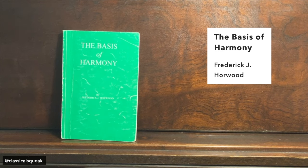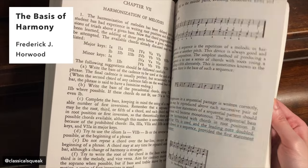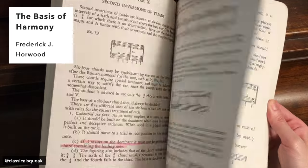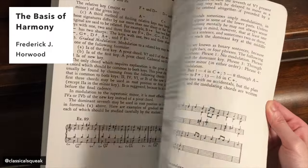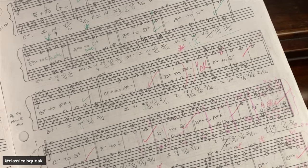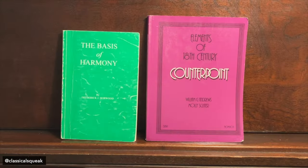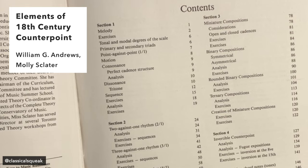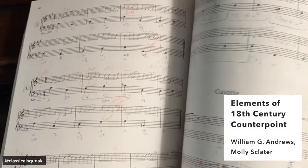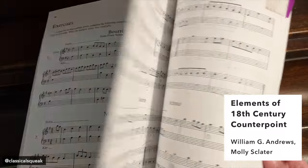For harmony, we used the Basis of Harmony. Each end-of-chapter had exercises, but not ones you could fill out directly in the book, so I had to hand write all of them on manuscript paper and then complete the exercises. Most of my work looked something like this. There used to be a dedicated counterpoint exam, so we used Elements of 18th Century Counterpoint. RCM has since gotten rid of the dedicated counterpoint exam and merged it with the levels 10 and ARCT, which is why those exams are called harmony and counterpoint.